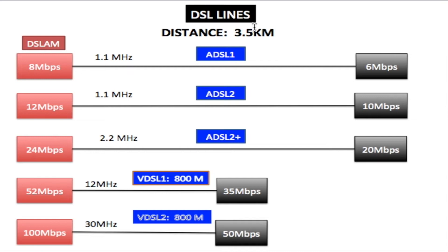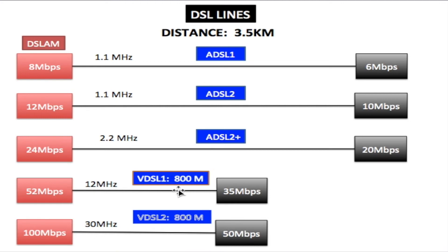We shorten the distance from 3.5 kilometers to 800 meters for both VDSL 1 and VDSL 2. At 52 megabits on VDSL 1 over 800 meters, you receive 35 megabits per second — a loss of 17 megabits. On VDSL 2, you send 100 megabits at 30 megahertz, but only 50 megabits arrives at the modem due to the higher frequency. So the higher the frequency, the greater the loss, and to increase the data rate the line must be made even shorter.